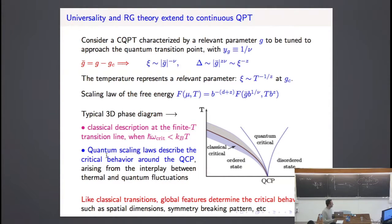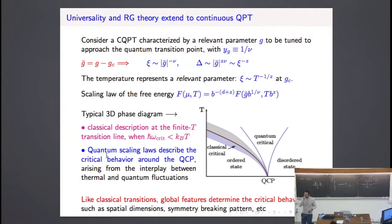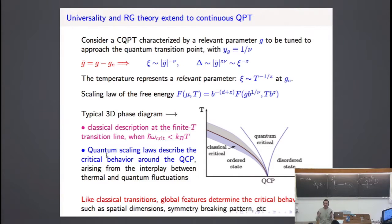There can be z different from one, and if I have time I'll show you some examples. Like classical transitions, global features determine the critical behavior. We apply the renormalization group theory — we have the same idea: an order parameter, scaling fields — and the critical properties are determined by only a few global properties: the spatial dimensions, the symmetry, and the symmetry breaking pattern. It's the same idea.